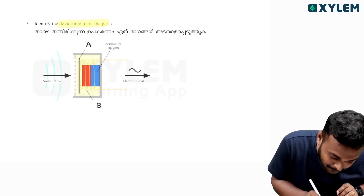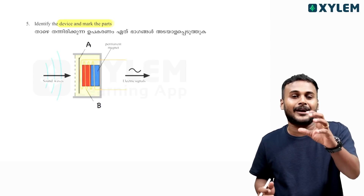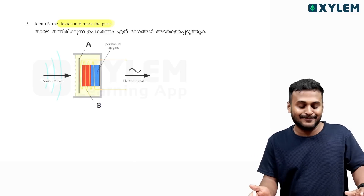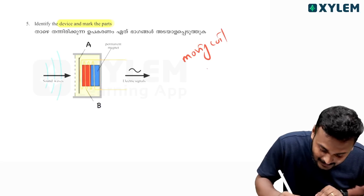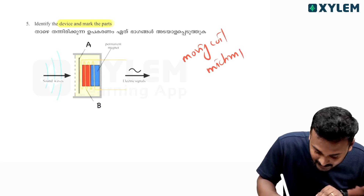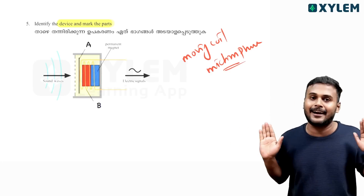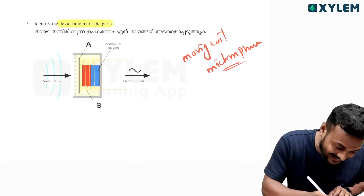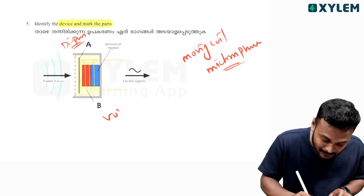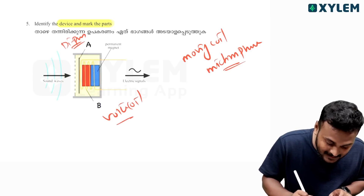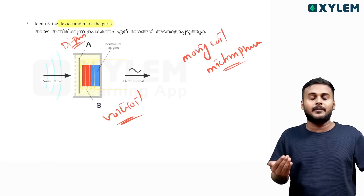Identify the device and mark the parts. This is a moving coil microphone — no doubt. Moving coil microphone. A is the diaphragm, B is the voice coil. So the moving coil microphone — two parts are identified.